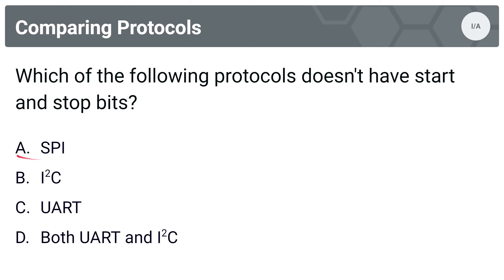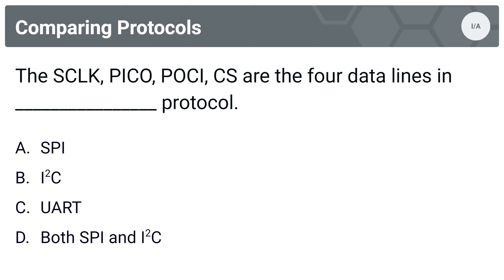Next question is a fill-in-the-blank: SCLK, PICO, POKEY, and CS are the four data lines in which protocol? Without even reading the options, this has to be SPI, because SPI traditionally has four data lines — more than I2C or UART. So naturally, the answer is A, SPI.